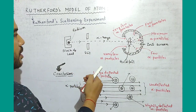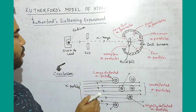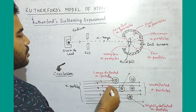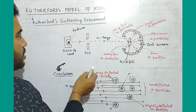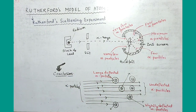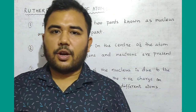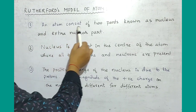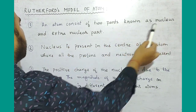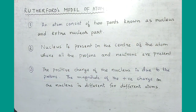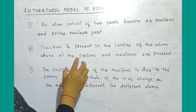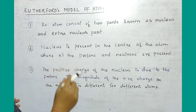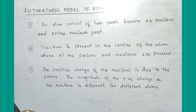In this experiment, the positive area is called the Nucleus and the area around it is where the Electrons are present. An atom consists of two parts known as the nucleus and the extra-nuclear part. The positive part is the nucleus and the electrons form the extra-nuclear part.